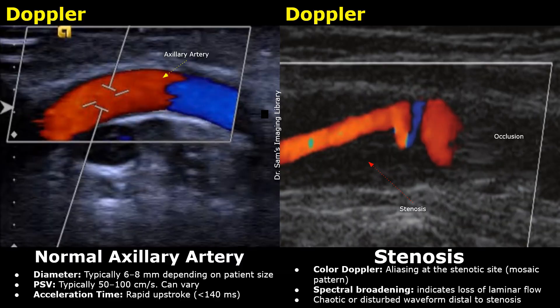Hello everyone, this is Dr. Sam and today you will learn about B-mode and Doppler ultrasound of the axillary artery. The normal axillary artery has an approximate diameter between 6 and 8 millimeters, but it can still vary based on patient size.